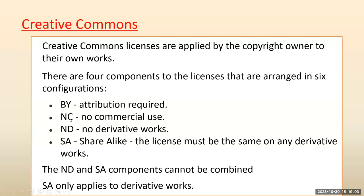CC BY NC means you can use that particular content but it should not be used for commercial purposes. ND means no derivative works — you are not going to create anything from the existing content. For example, if you download a slide and want to change something and publish it — if it says no derivative works, you should not do it. The last one, SA — share alike — means the license must be the same on the derivative works. You should not change any of the protocols. The ND and SA components cannot be combined. SA only applies to derivative works.